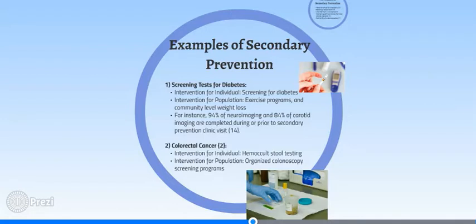The modes of intervention within the subclinical stage involve the use of screening tests, which is central to secondary prevention, and adequate treatment to control disease progression. For instance, in terms of the intervention for an individual, the progress of the diagnosis for metabolic syndrome would involve screening for diabetes.